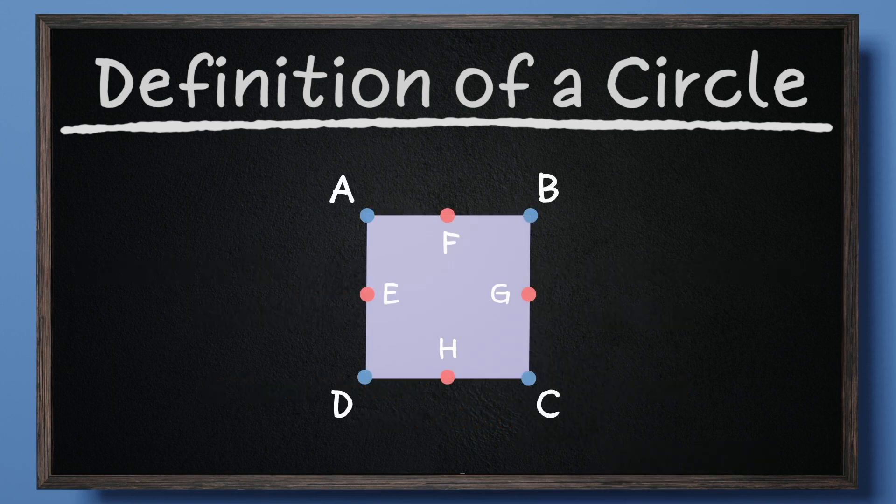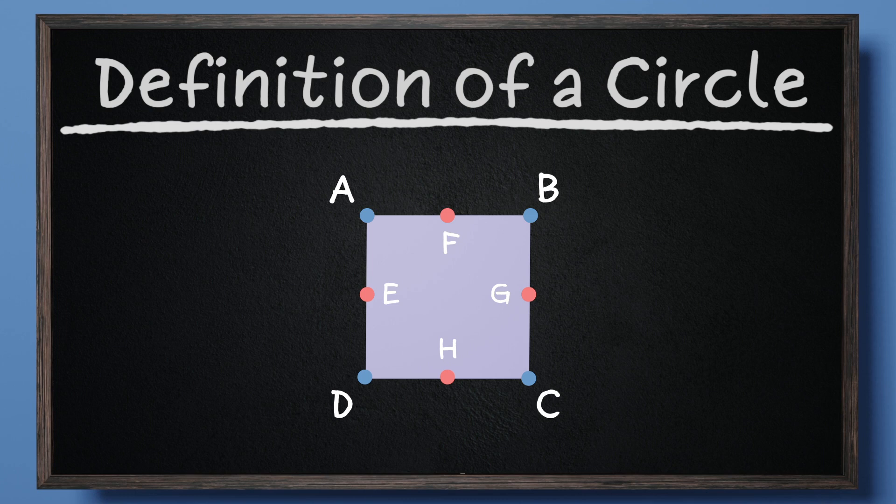For now, examine square ABCD. Points A, B, C, and D are locations of each vertex.